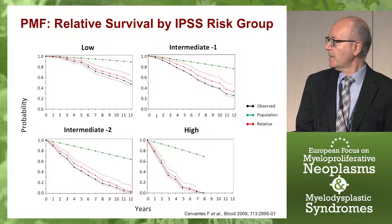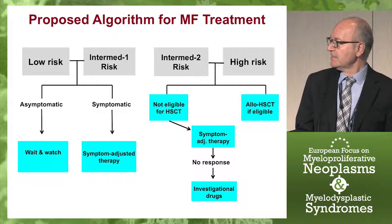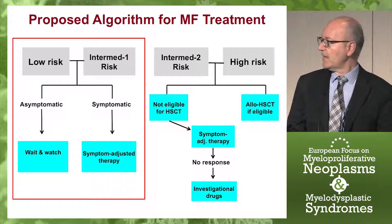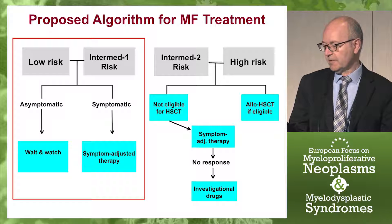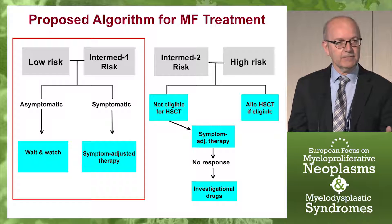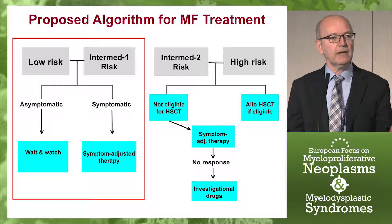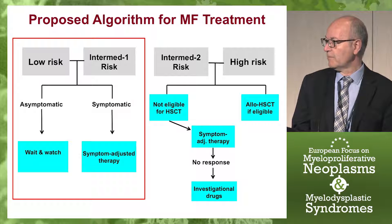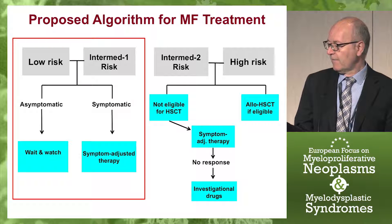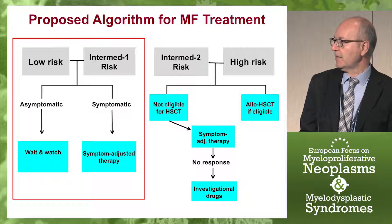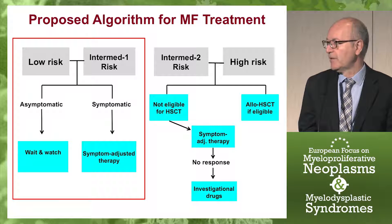Then the disease progresses and there is a shortening of survival. For these patients, this would be the proposed algorithm. If patients are asymptomatic, they don't need any treatment because they don't have symptoms. Their life expectancy is relatively long, so wait and watch. While for patients who are symptomatic, of course, symptom-adjusted therapy.